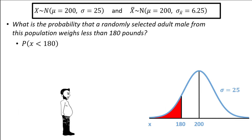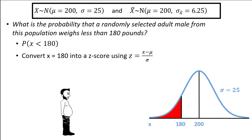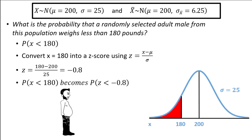Technically we can go right to the calculator now, but most instructors convert into z-scores first. To do this, we convert x equals 180 into a z-score using the z-score formula: x minus mu divided by sigma. This becomes 180 minus 200 divided by 25, which is equal to negative 0.8. Our new probability statement becomes the probability z is less than negative 0.8. x-bar has been transformed into a z-score on the standard normal distribution. If we find the probability of z less than negative 0.8, it will be the same as the probability x is less than 180.